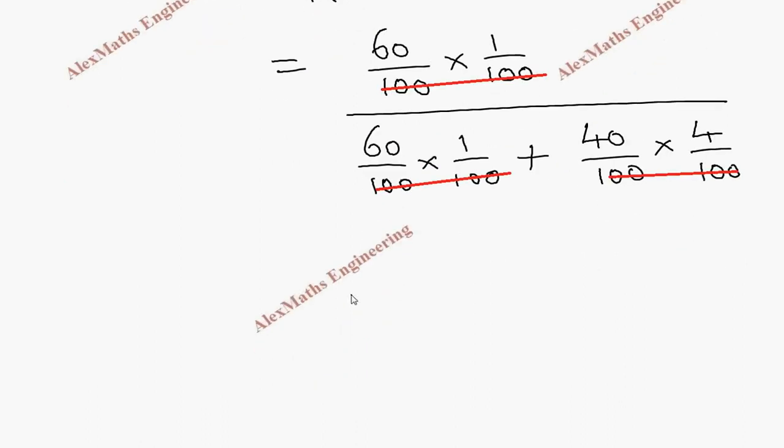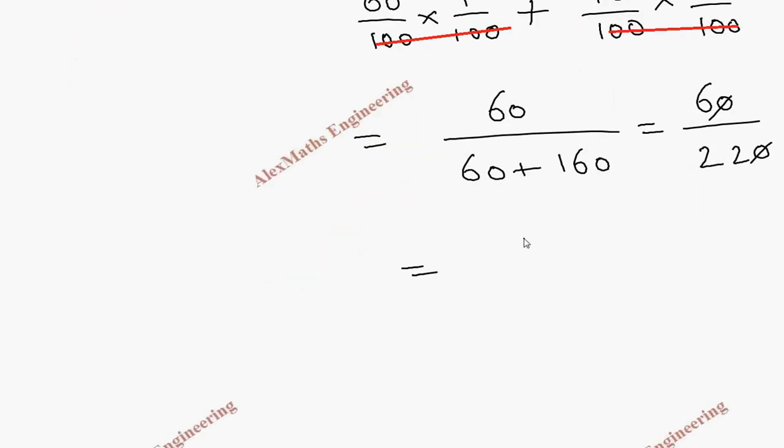Now, the numerator is 60 and denominator is 60 plus 160. So this is 60 divided by 220. We can cancel the zero. After canceling two tables, this will be 3 by 11.